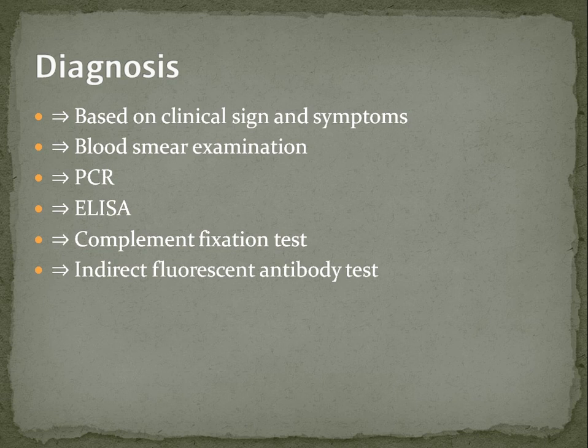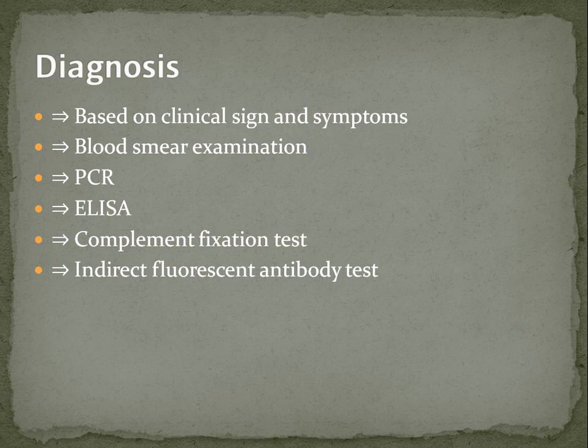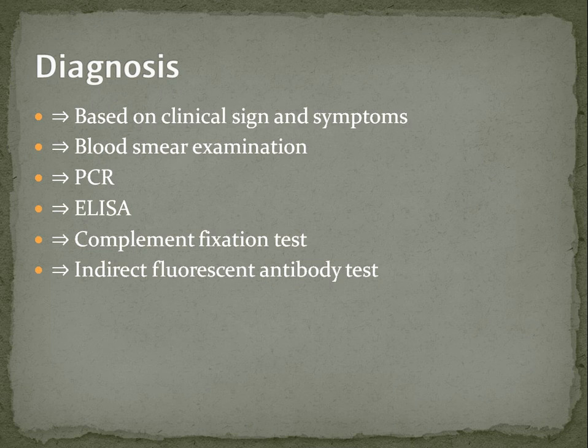To talk about the diagnostic approach: diagnosis is first based on clinical signs and symptoms. We then proceed to blood smear examination, and if intra-erythrocytic bodies, spherocytes, etc. are seen, we go for PCR for confirmation and ELISA for specific confirmation of anaplasmosis. We also perform the complement fixation test and indirect fluorescent antibody test to confirm the disease.